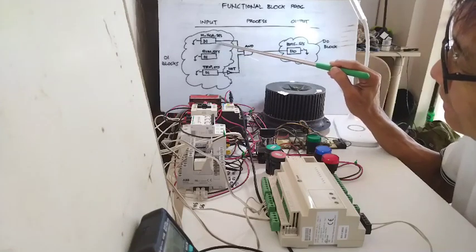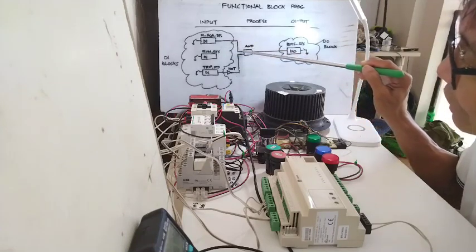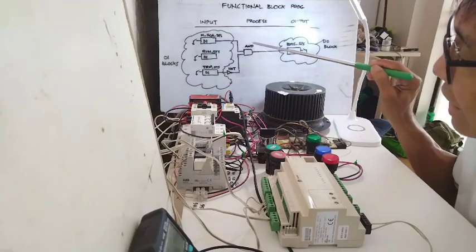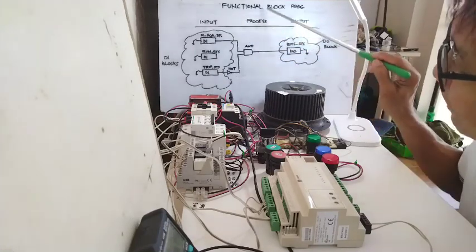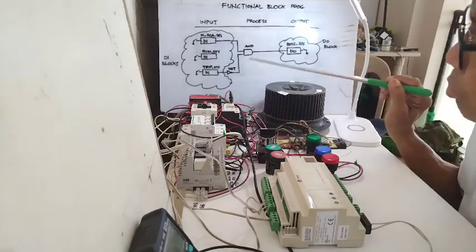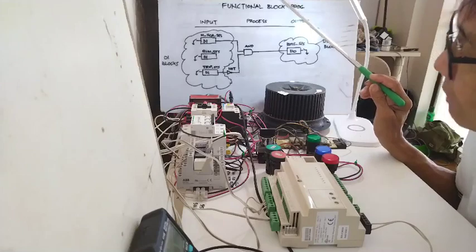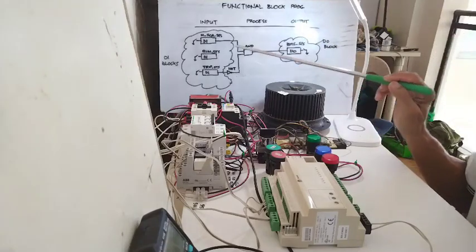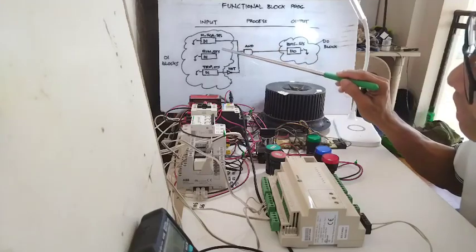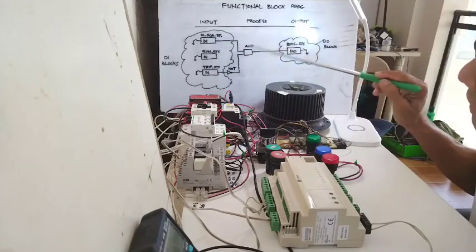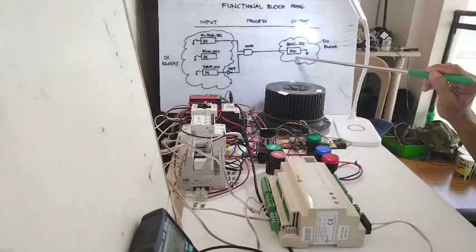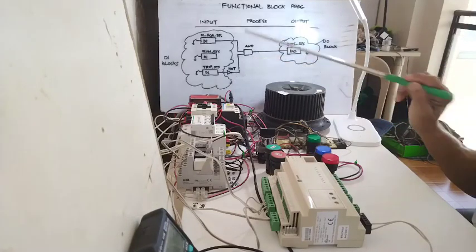This output will become an input to your AND logic gate. On my process side I have the AND gate. In my functional block programming I will be using different blocks. In this program I use DI blocks, NOT gate, AND gate, and one DO block.